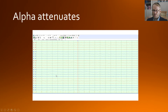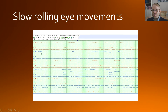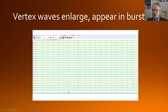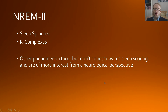The alpha activity starts to attenuate, then we start getting slow rolling eye movements — these slow rolls you can see here. Then over the vertex you start having these small V waves, which appear and become larger in amplitude, appearing in little bursts. At some point one then descends into non-REM 2 sleep, which is characterized by sleep spindles and k-complexes.